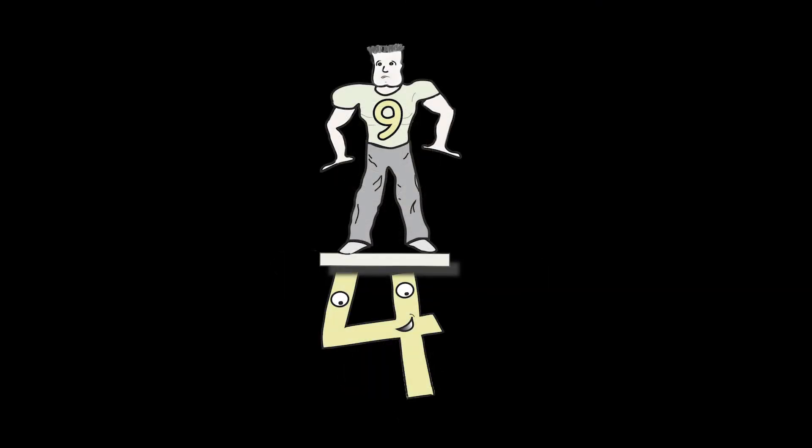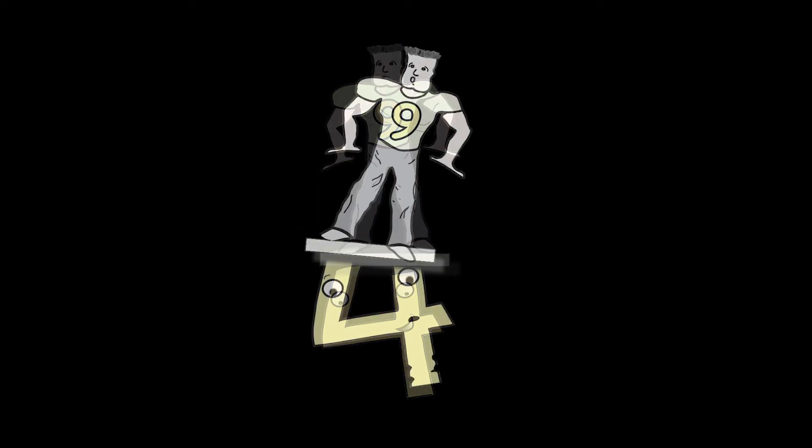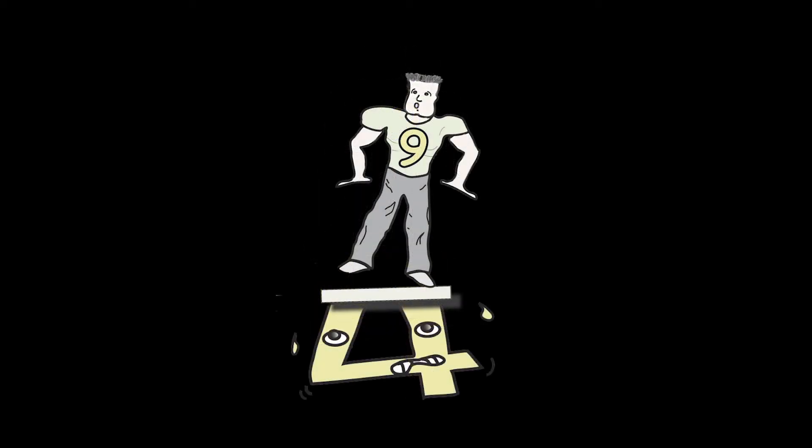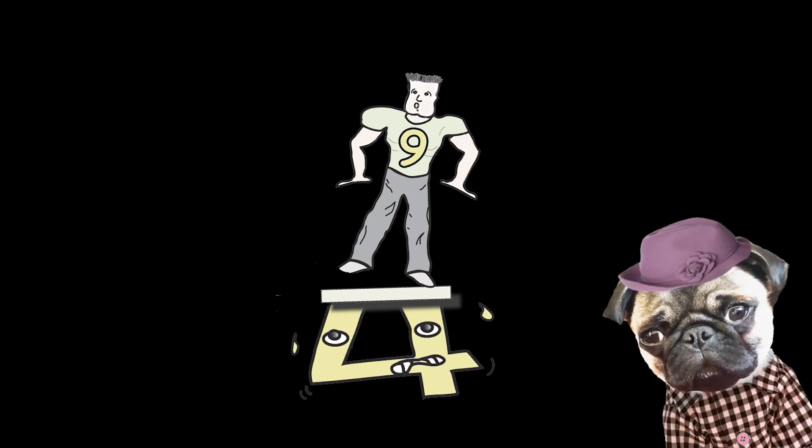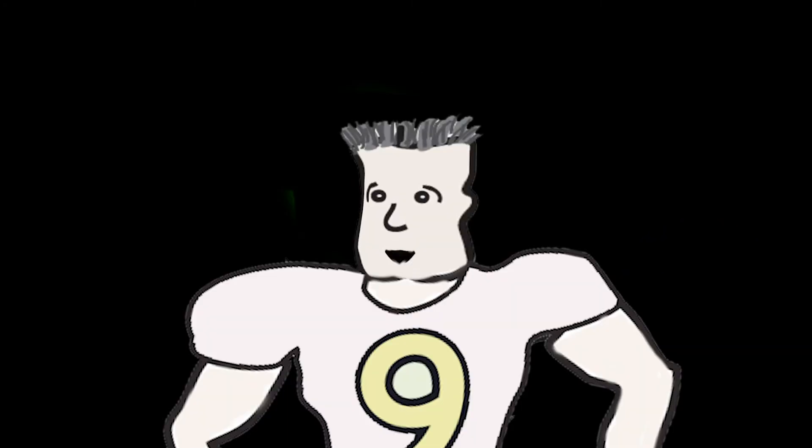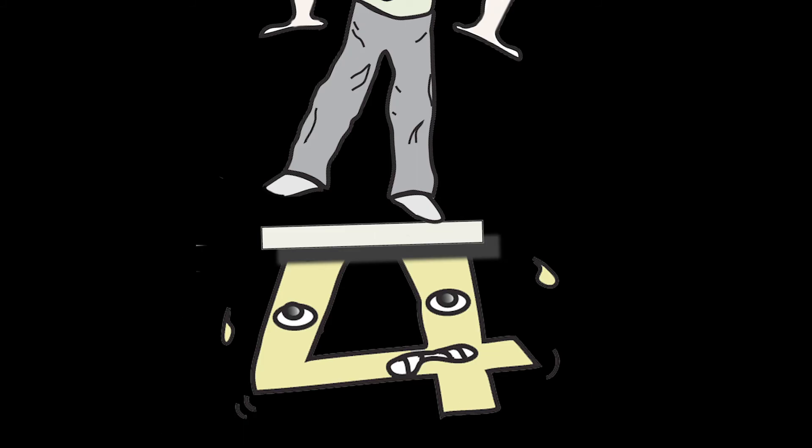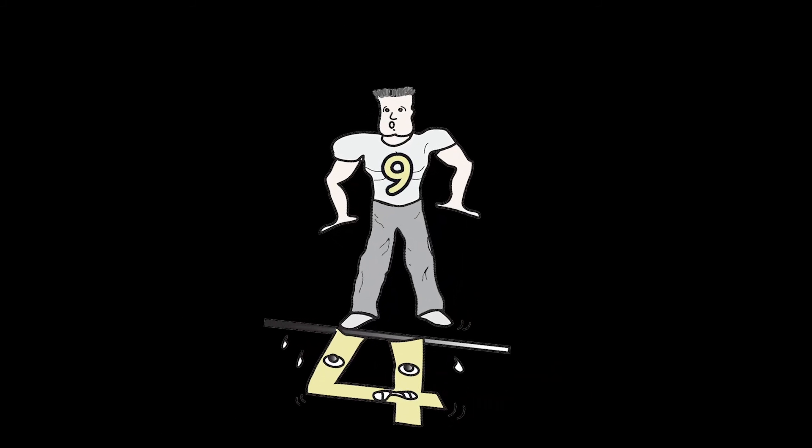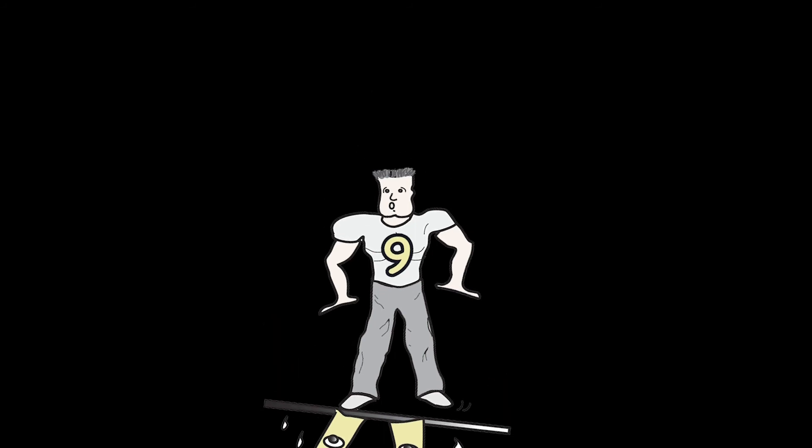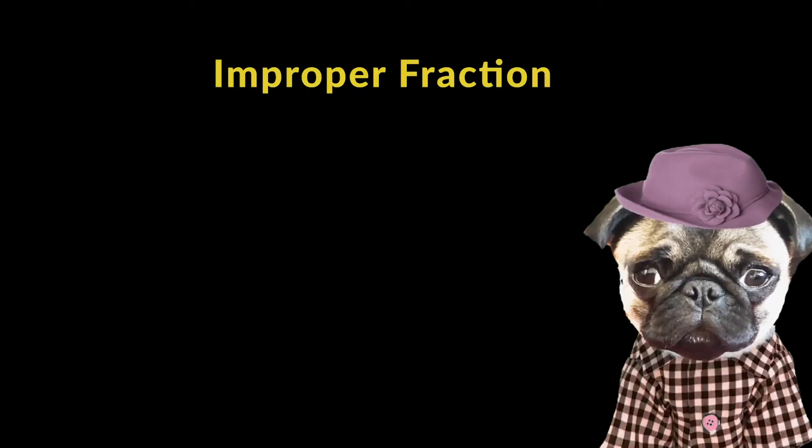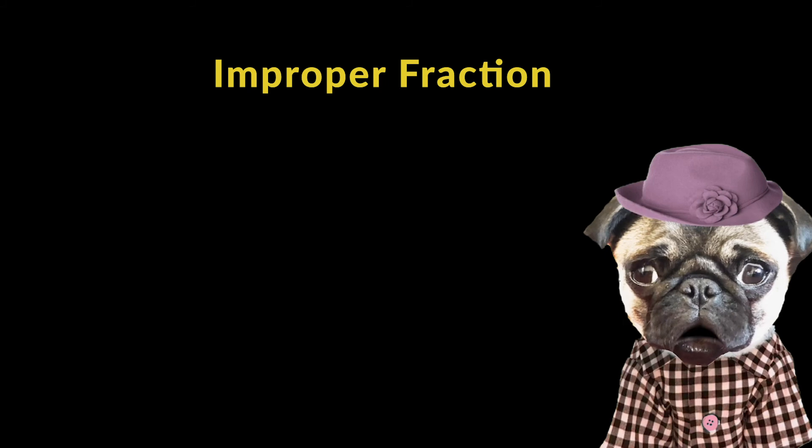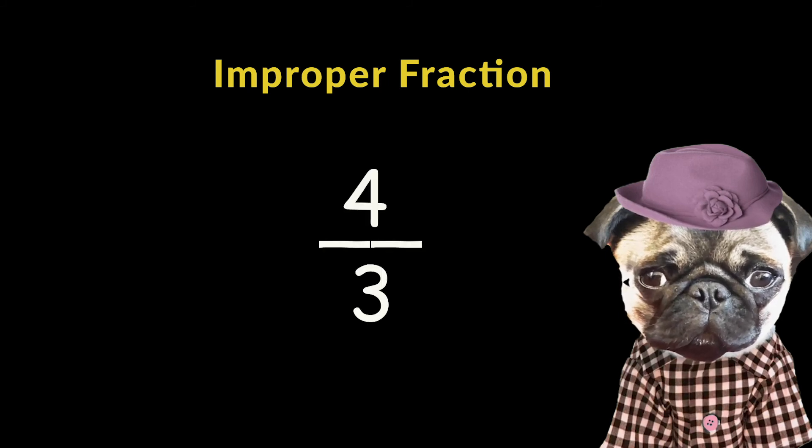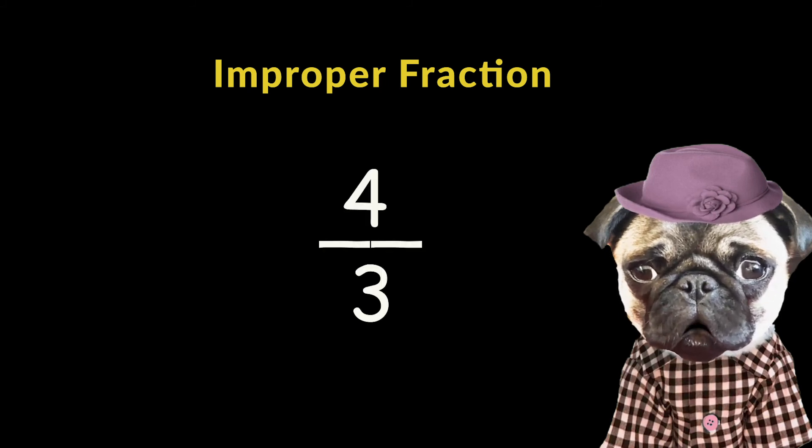Wait a minute. Something has gone wrong. That larger number is being held up by the smaller number. That's not proper. I'm too heavy. The smaller number is going to collapse. He can't hold up the larger number much longer. So remember, an improper fraction is when the top number is larger than the bottom number.